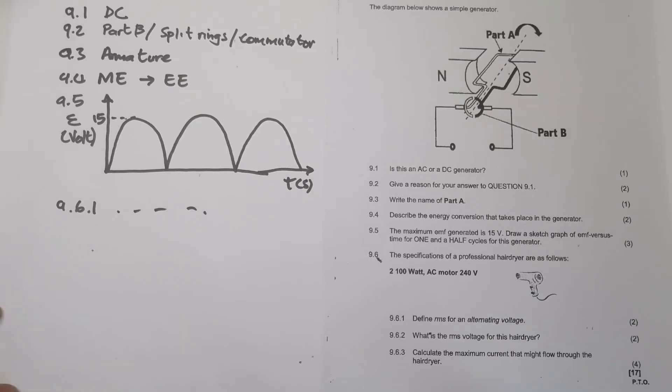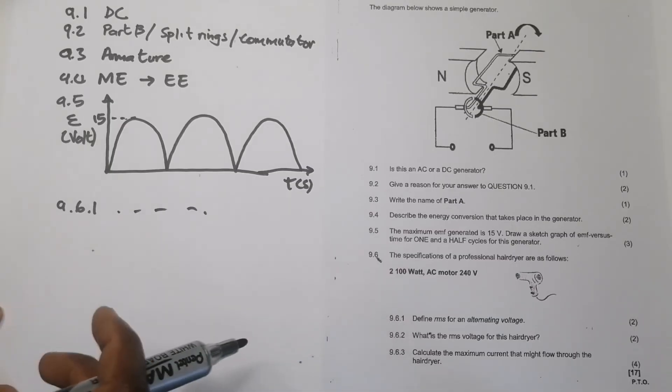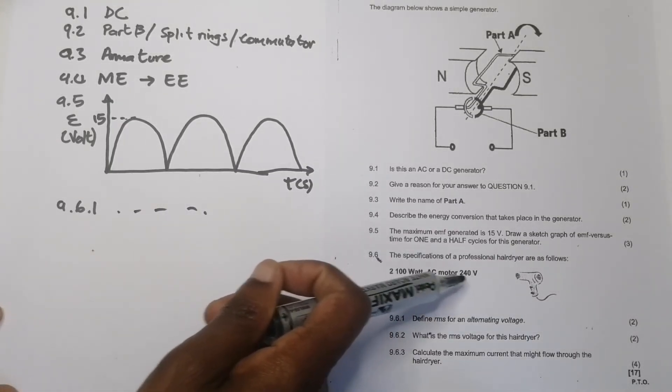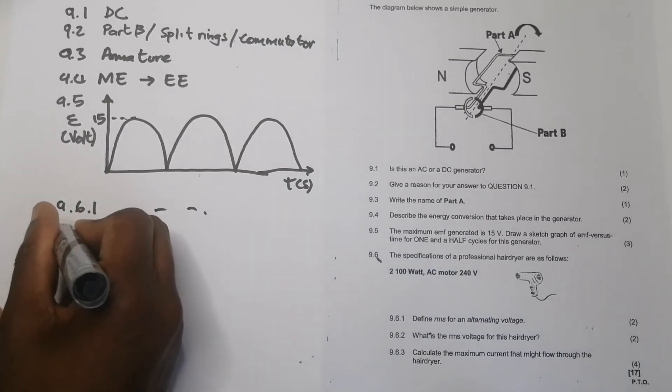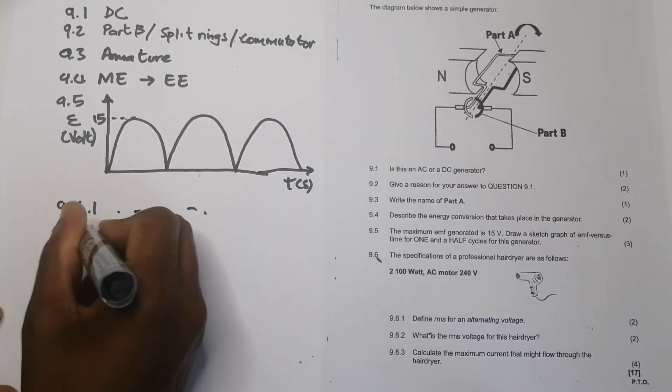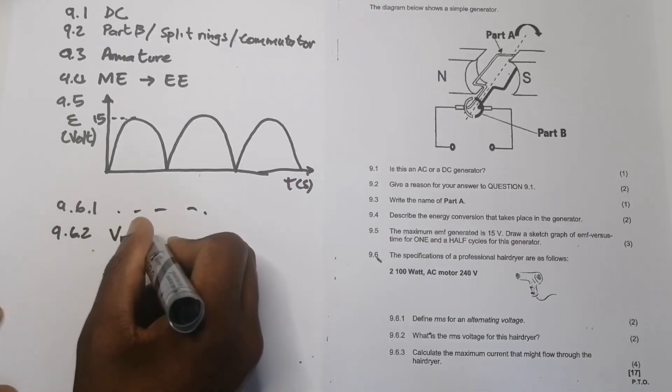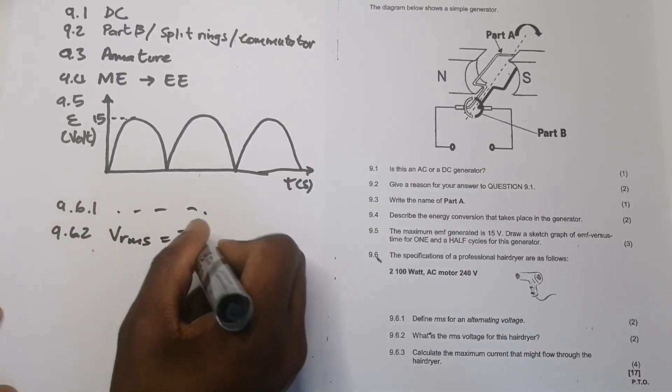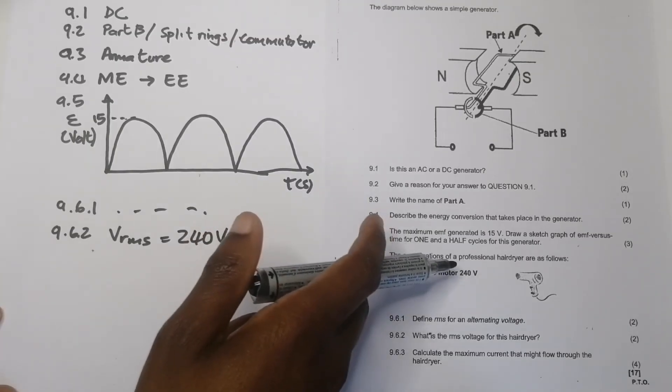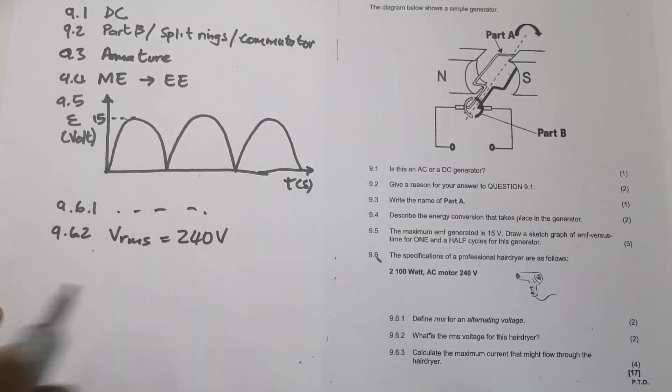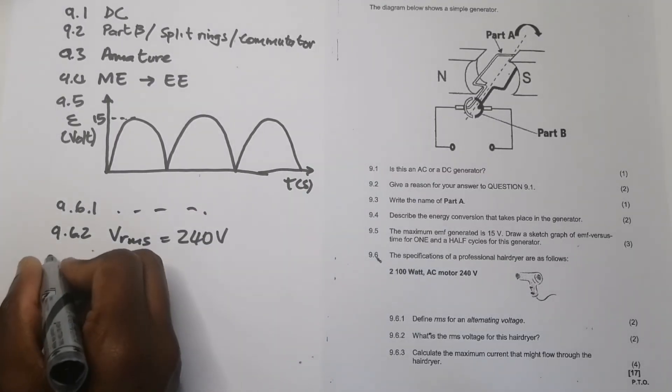They say what is the RMS voltage of this hair dryer. Obviously you are given that 240 volts there, so you know that the RMS value should actually be just VRMS is 240 volts. Remember I said, when you're given that power rating and there's a voltage next to it, usually we are given that VRMS.